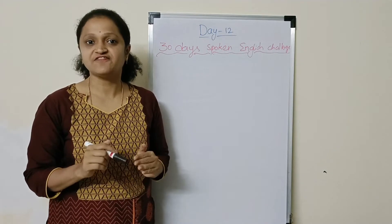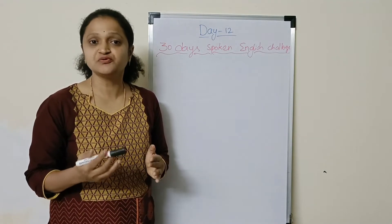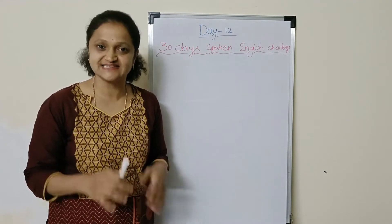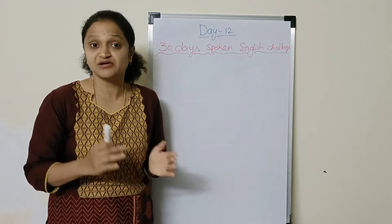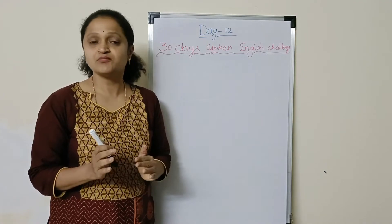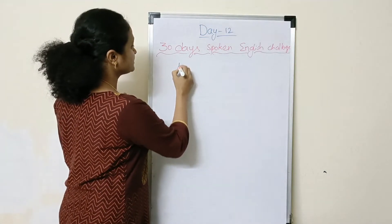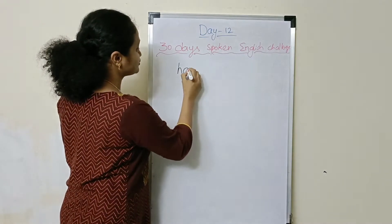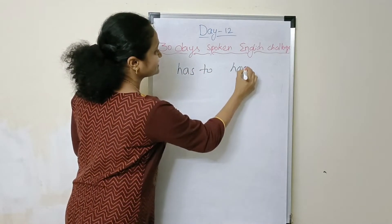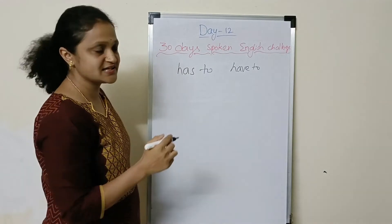Has to and have to are meant to be the most important structures. Where to use has to and have to? We have done this in the previous class, but I am explaining it again.